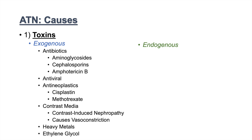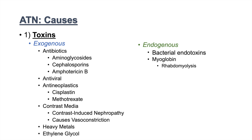Endogenous causes of ATN include bacterial endotoxins — if a person has a bacterial infection, those bacteria can release endotoxins that damage the renal tubules. Myoglobin from rhabdomyolysis is another cause; if a person sustains a severe injury where skeletal muscle is damaged, myoglobin released into the bloodstream can damage renal tubules. Hemoglobin can similarly cause damage to the renal tubules, leading to ATN.